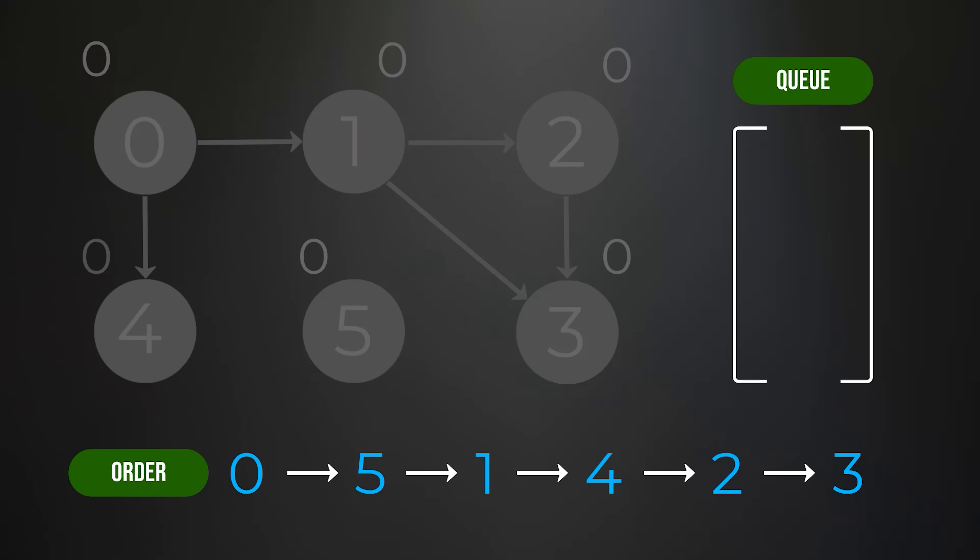One thing to notice with Kahn's algorithm is that after the topological ordering is fully complete, all of the indegree counts are now 0. If we stopped processing nodes but the indegree counts were not all 0, that would mean there is a cycle in the graph.